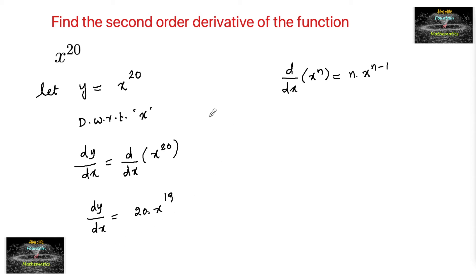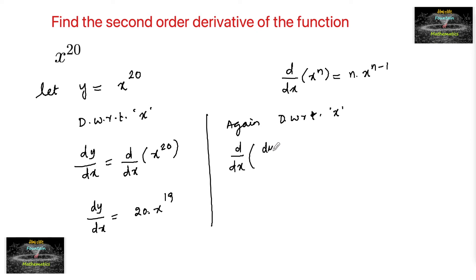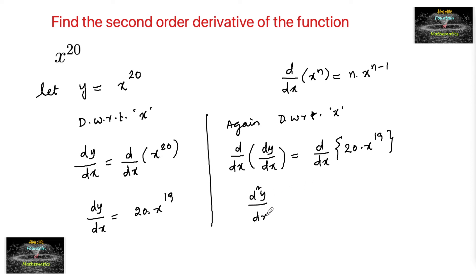So this is the first differentiation. Again differentiating with respect to x, we will have d by dx of dy by dx is equal to d by dx of 20 times x to the power of 19. So this is d square y by dx square. Since 20 is constant, x to the power of 19 can be written as 19 times x to the power of 19 minus 1, that is 18.